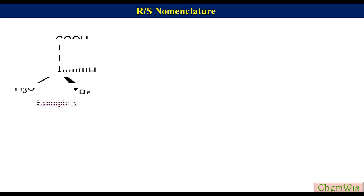Example A. Label the groups attached to the chiral center according to their priorities: bromine is 1, carboxylic acid is 2, methyl is 3, and H is 4. The fourth priority group is on a hatched wedge, so there is no need for interchange. Draw an arrow from 1 to 3 via 2. Since the direction of the arrow is counter clockwise, the configuration will be S.